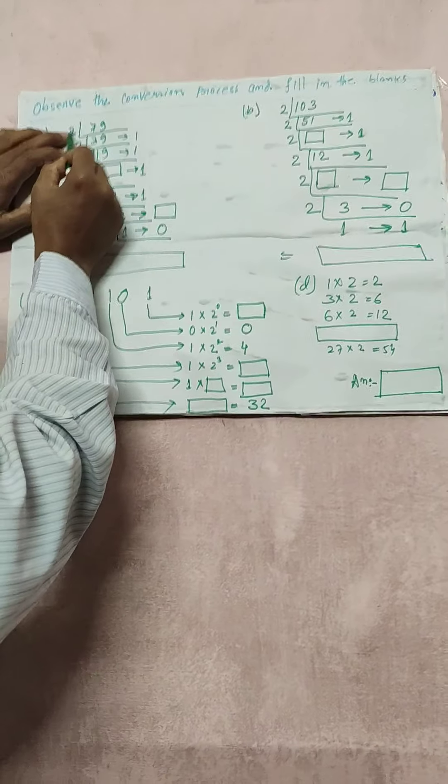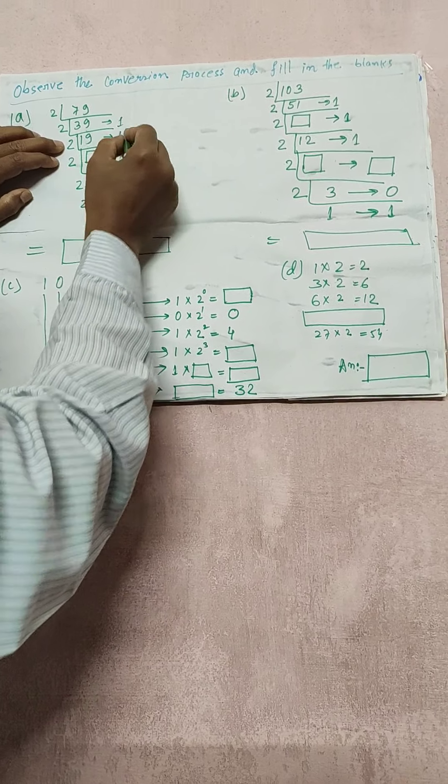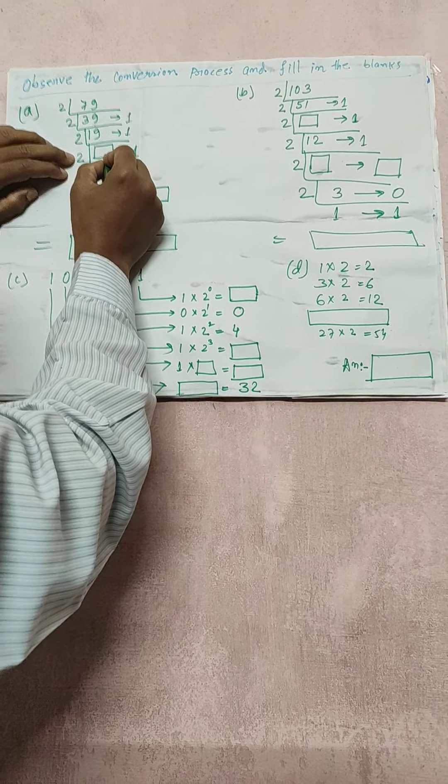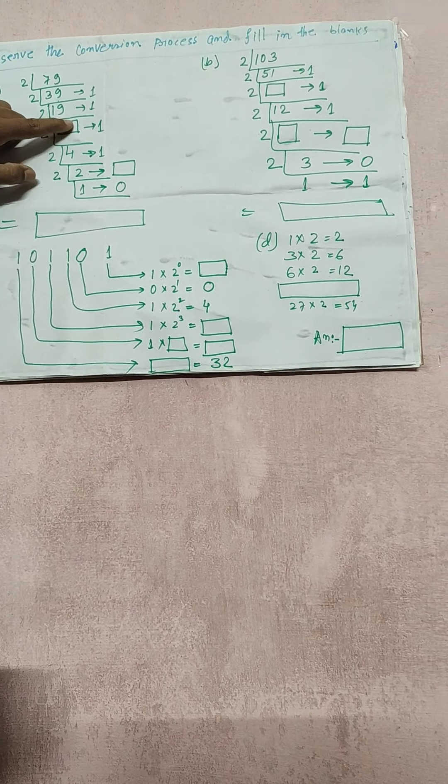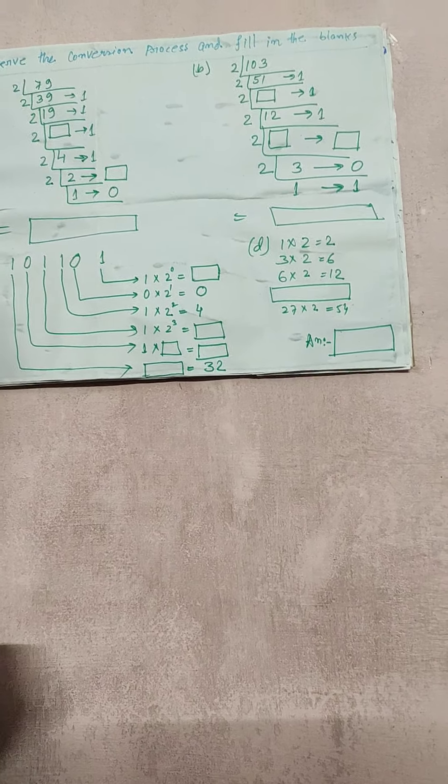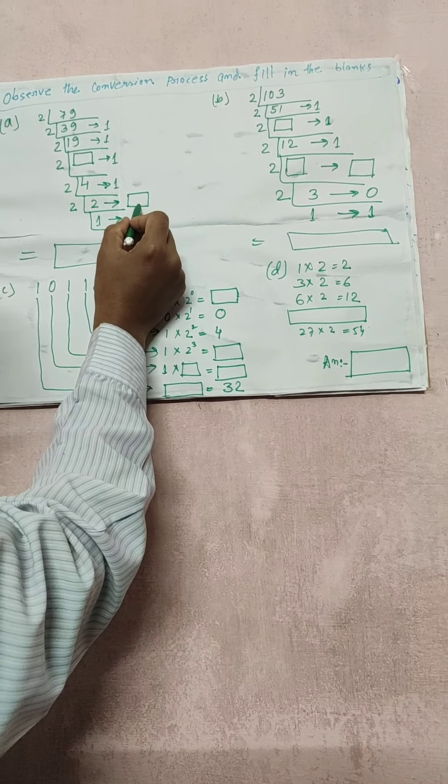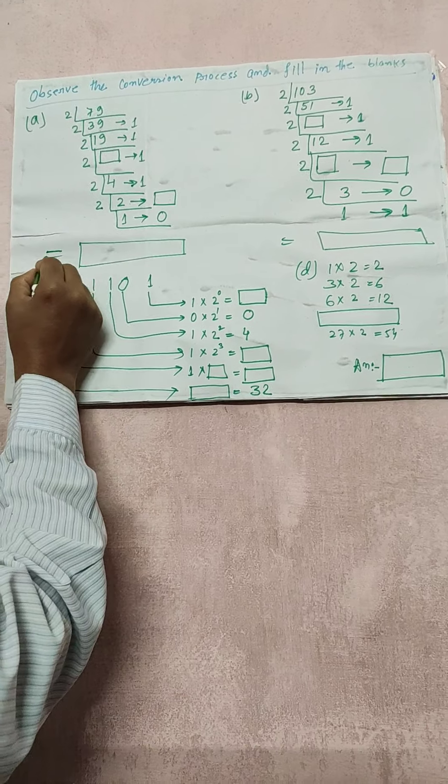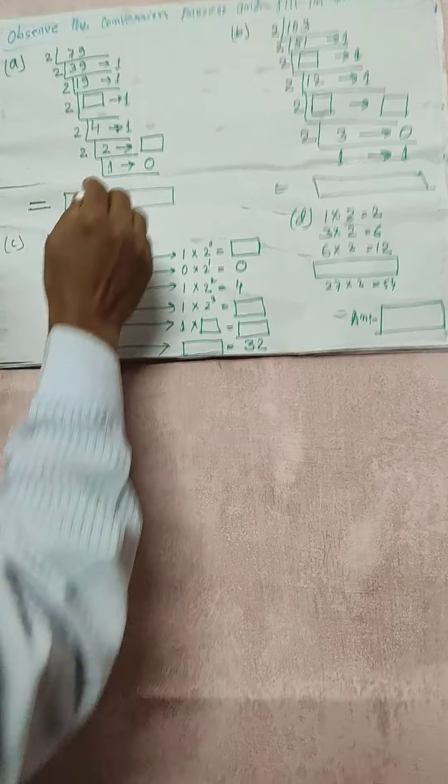Suppose that after division the remainder is 1. So what will be the number after division? It is very easy - you need to write inside the box the number. Same as down below, what will be the remainder. And at last you will write the total answer of the solve.